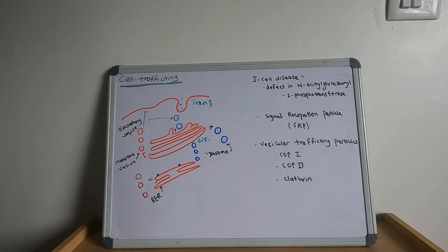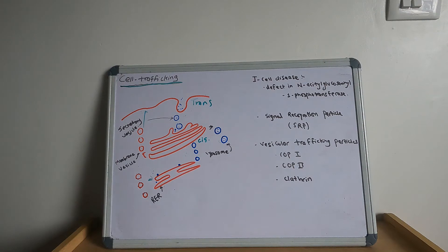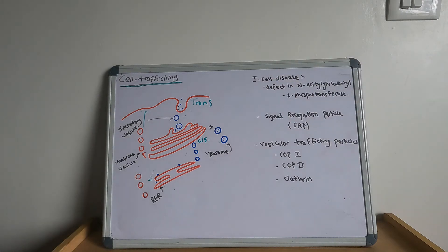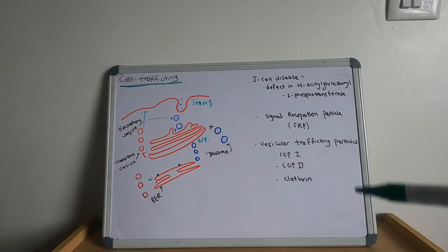Endosomes are the sorting centers for materials coming from outside the cell or from the Golgi, directing them either to the lysosome for destruction or back to the membrane or Golgi for further use. This will be discussed in detail in a subsequent lecture.